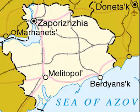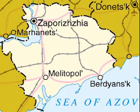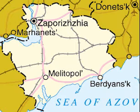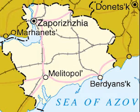Zaporizhia Oblast is characterized by a flat landscape. Soils are mostly Chernozem. Knowledge of the relief of the Zaporizhia Oblast today is especially important because of the problem of land reclamation and its more intensive use. The territory of Zaporizhia Oblast as a whole has a flat topography, but there are markedly elevated and depressed areas, which differ in shape, origin, and age.